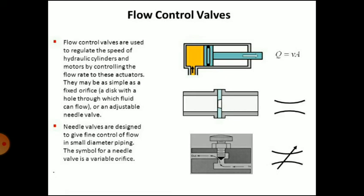Flow control valves are used to regulate the speed of hydraulic cylinders and motors by controlling the flow rate to these actuators. They may be as simple as a fixed orifice — a disc with a hole through which fluid can flow — or an adjustable needle valve. Needle valves are designed to give fine control of flow in small diameter piping. The symbol for the needle valve is a variable orifice.